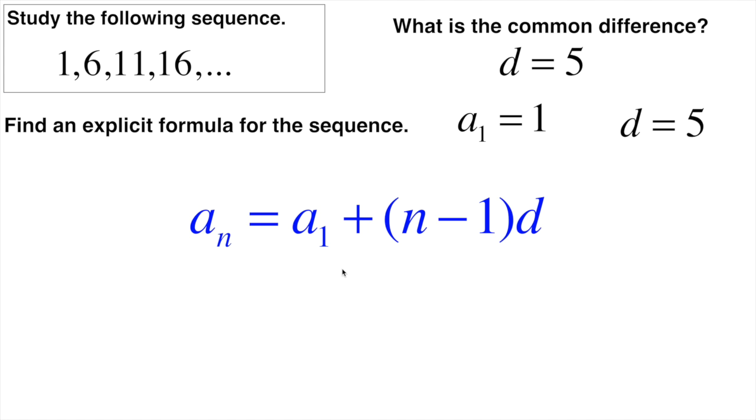Now what we're going to do is just fill in what we know. aₙ, we don't know that one. That's going to be part of our formula. a₁ we know is 1, and we don't know n, but we do know d. d is the difference. The difference is going to be 5. So we're just going to start filling that in.